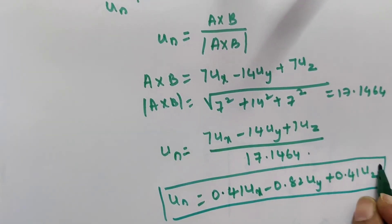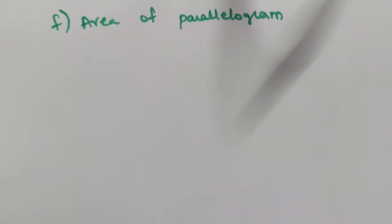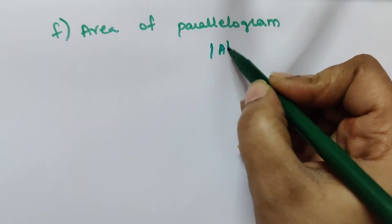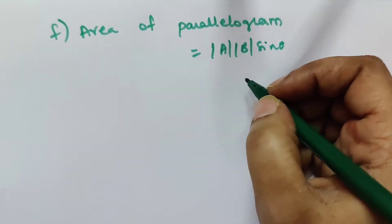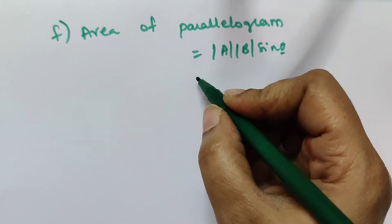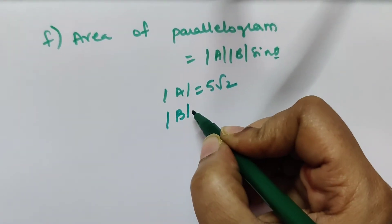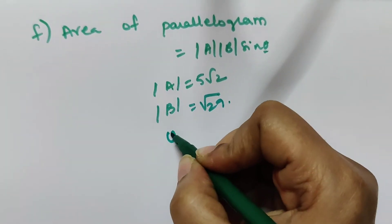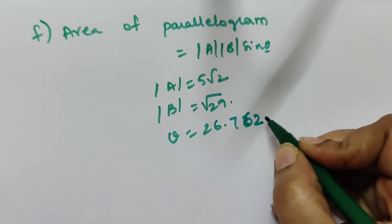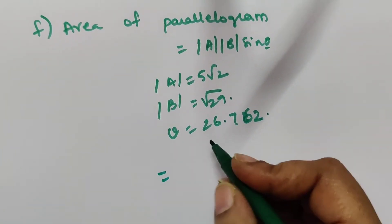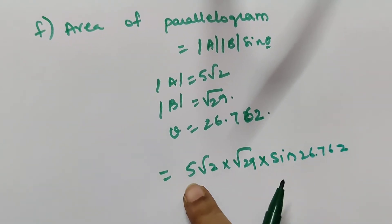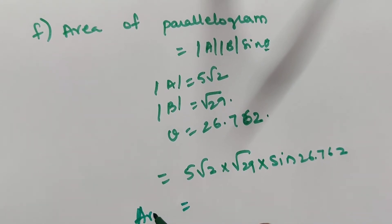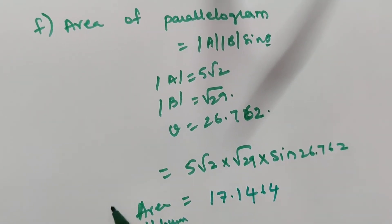The area of the parallelogram is given by: Area = |A| × |B| × sin(θ). Substituting: |A| = 5√2, |B| = √29, θ = 26.762°. So Area = 5√2 × √29 × sin(26.762°) ≈ 17.1464 square units.